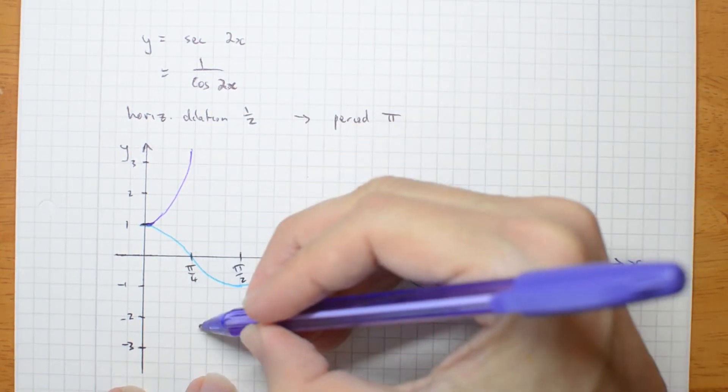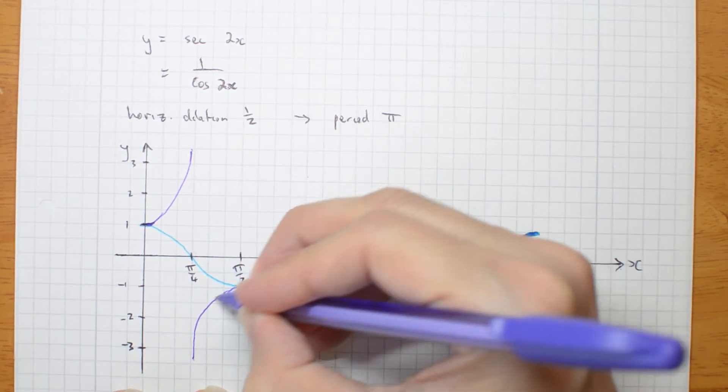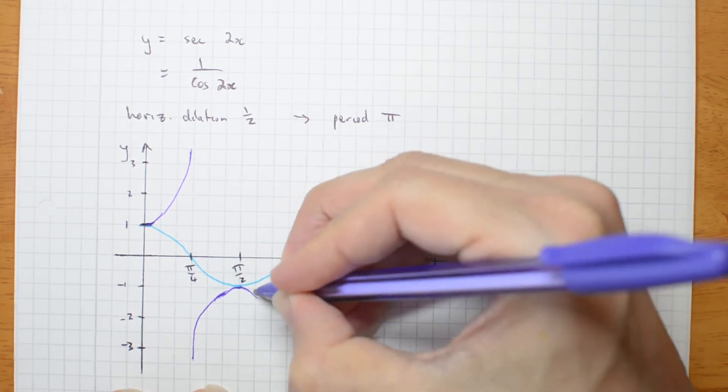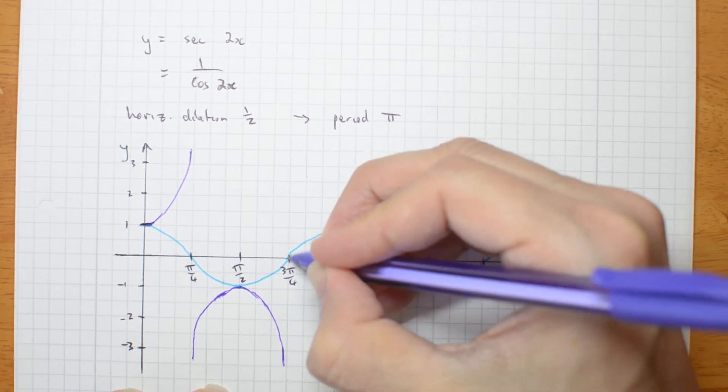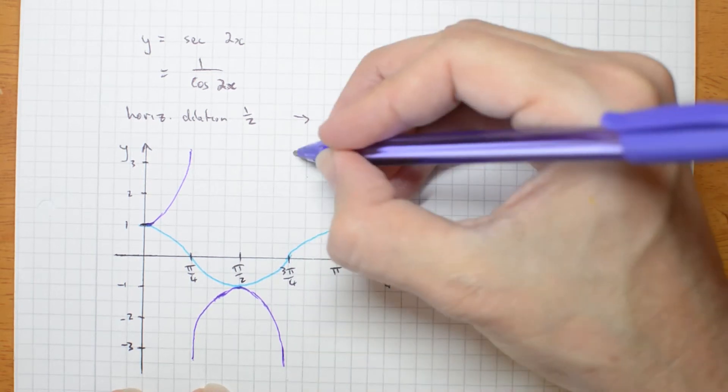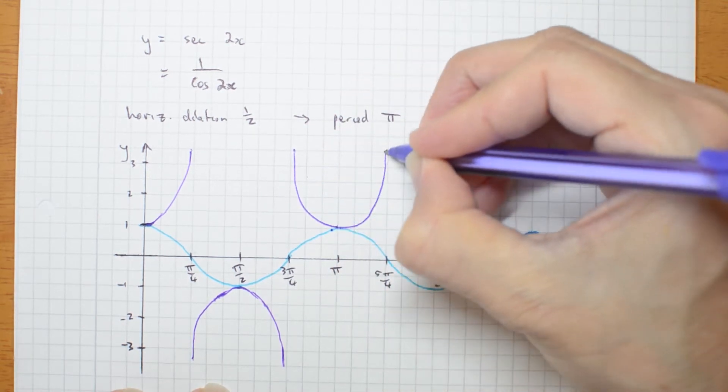It's going to come back on the other side. It's going to touch the original where the y-coordinate is 1, and then it's going to go back down to another asymptote, because the original graph is 0 and I'm dividing by 0. So come back here, just touch, go back up.